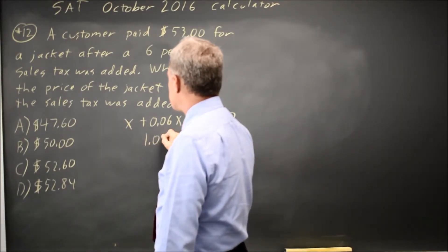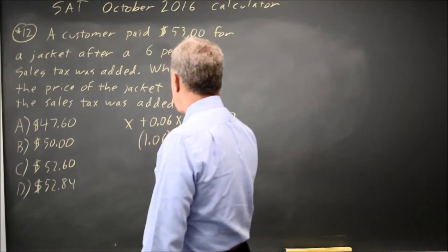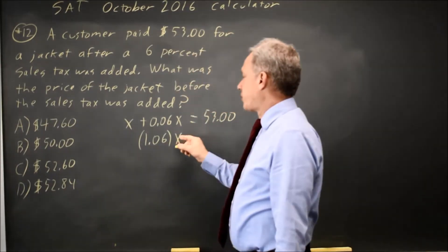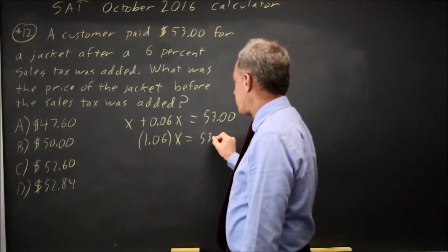Many of us will write this as 1.06X. If you don't write it that way the first time, you can always factor out the common factor of X. Equals 53.